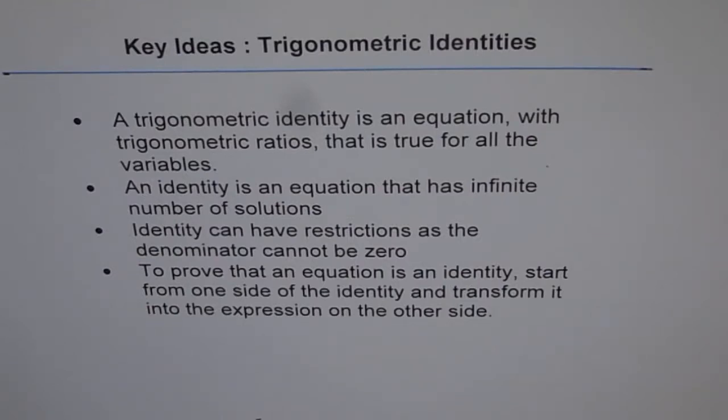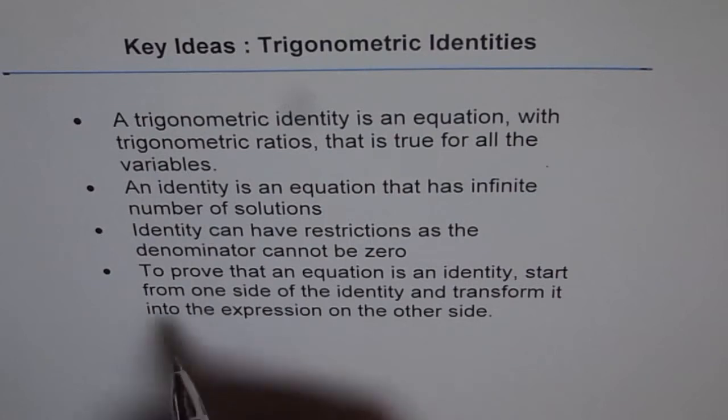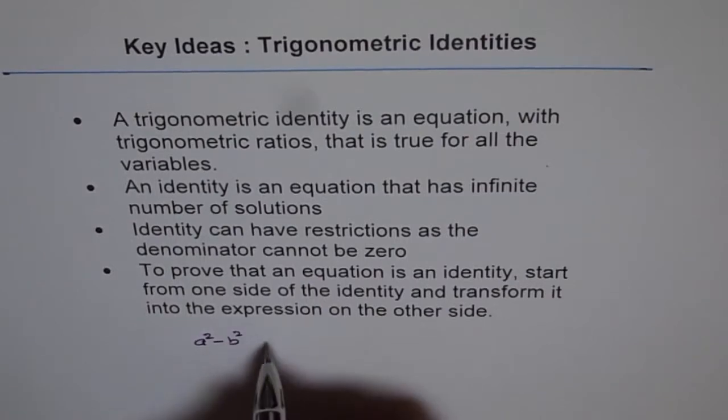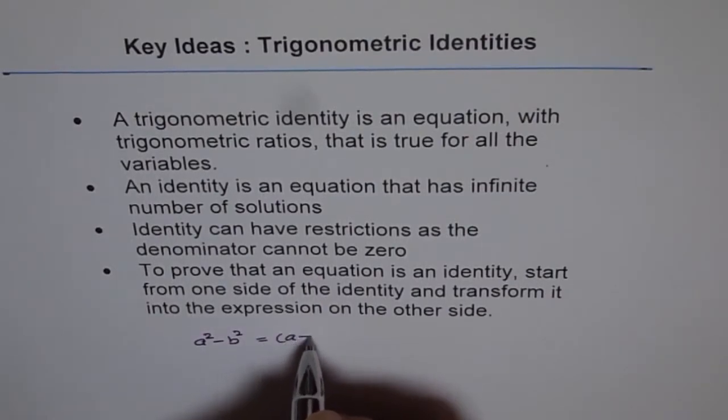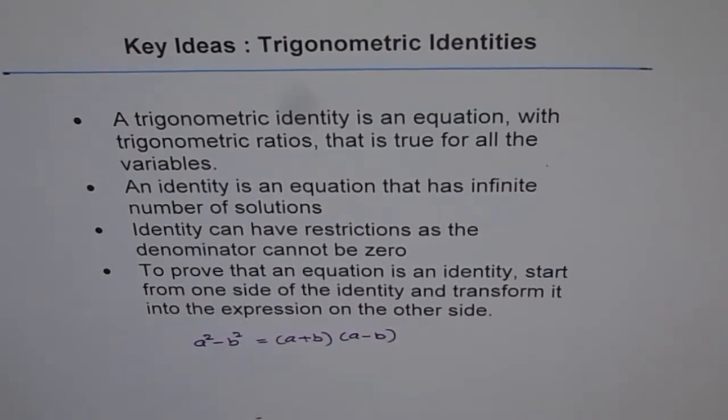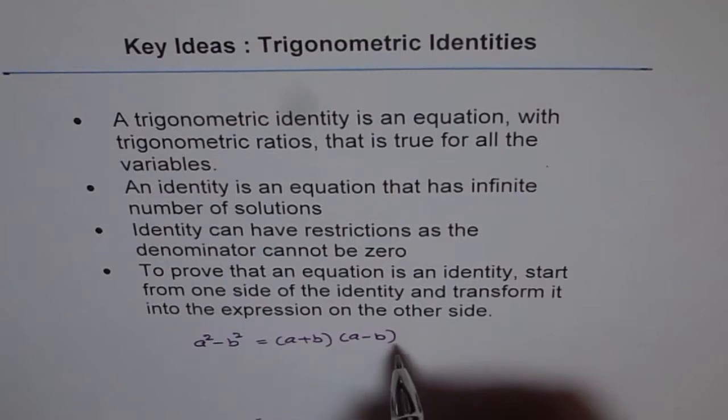Just to give you an idea, algebraic equations could be identities also. For example, you have a² - b² = (a+b)(a-b). That is an algebraic equation and it is also an algebraic identity. It is considered to be identity since it is true for all the values of a and b.